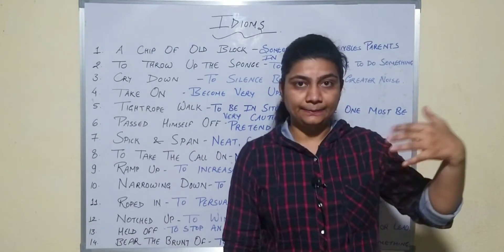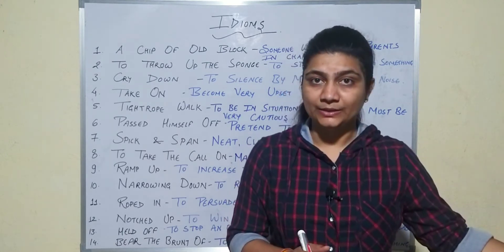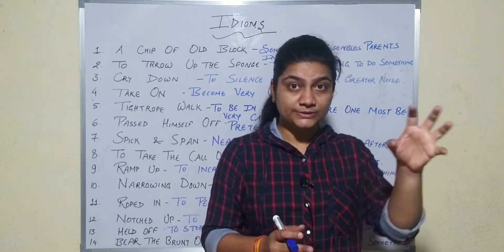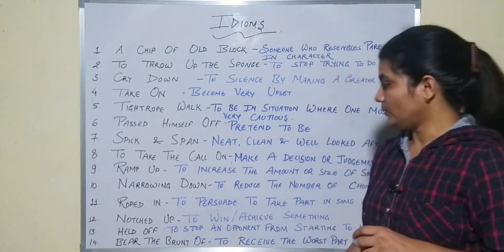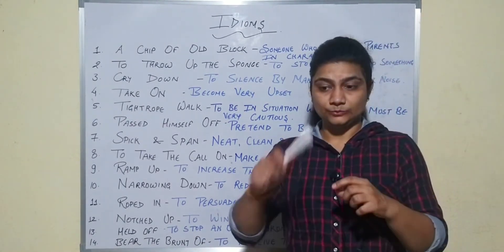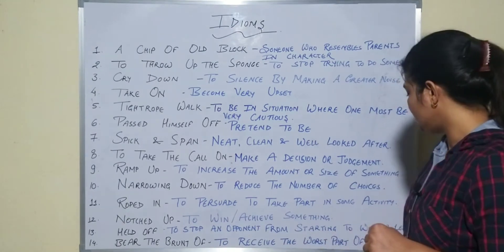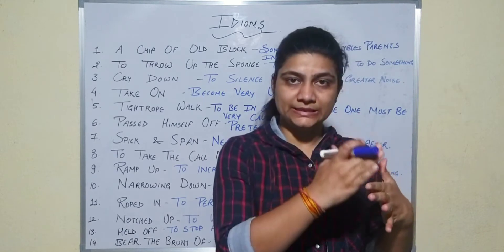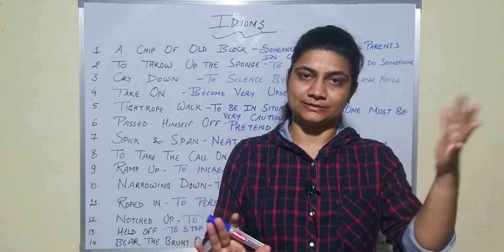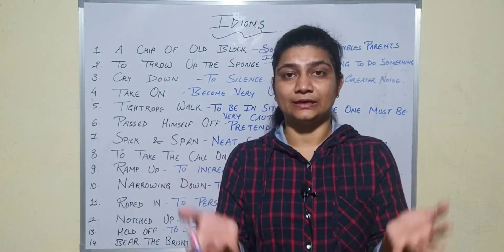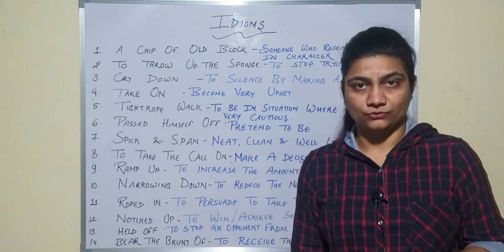'Held off' — ka matlab hota hai ki aap kisi competition mein hain, aap kisi sports mein hain, aur aapka jo opponent hai, jo aapke opposite khel raha hai, woh aapse aage badhne ki koshish kar raha hai ya aapse jeet raha hai — toh use hold karna, use stop karna aage badhne se — that is 'held off.' To stop an opponent from starting to win or lead. Then 'bear the brunt of' — to receive the worst part of something. Everything has two consequences — good and bad — toh jab kisi bhi cheez ka bad part, worst part aap receive kar rahe hain, then what is happening: you are bearing the brunt of it.